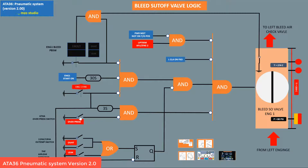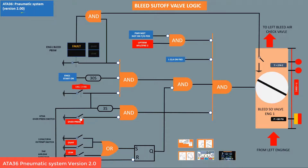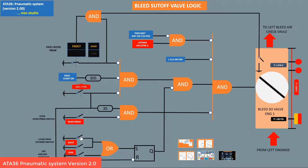For example, over pressure happens at the bleed valve inlet. Pressure greater than 80 PSI: bar opens, pressure reduces, bar opens again. For overheat, temperature greater than 274 degrees Celsius: bar closes, then bar opens again.